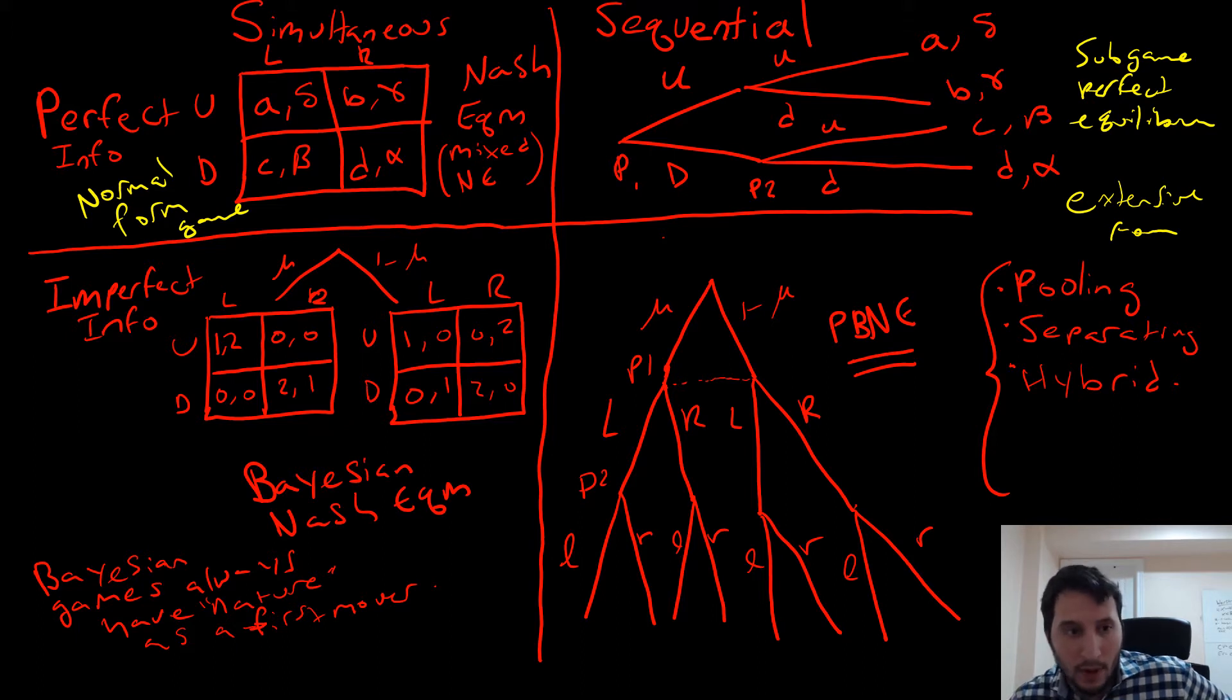In cases of imperfect information, these are referred to as Bayesian games. We're going to be talking about having nature as a first mover, and this is a theme throughout all the games whether they're simultaneous or sequential. In this context, we'll have two matrices where our players, whether one of them or both of them, are informed about the nature of the game in question. So there's uncertainty here.